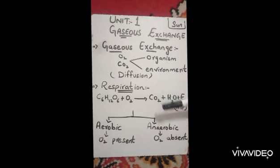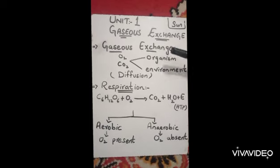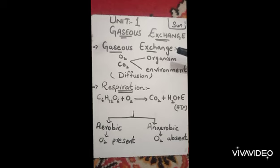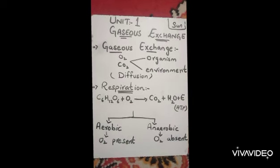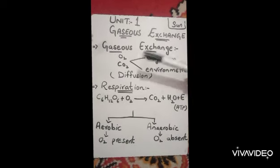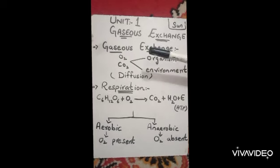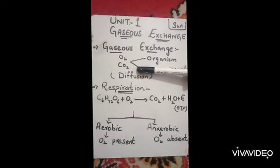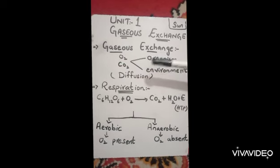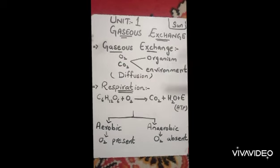The next process is respiration, and the third one is breathing. First, we will discuss gaseous exchange. Gaseous exchange means that there are two types of gases that living organisms and the environment exchange: the first one is oxygen and the second one is carbon dioxide. Oxygen and carbon dioxide are exchanged between the organism and the environment.